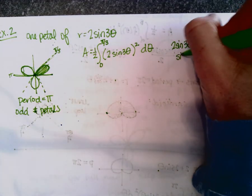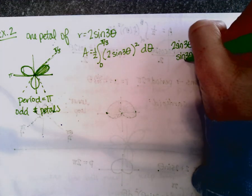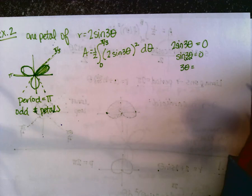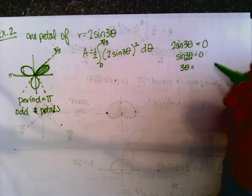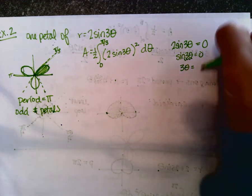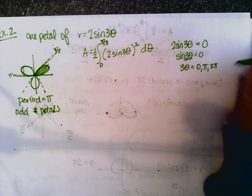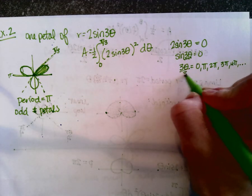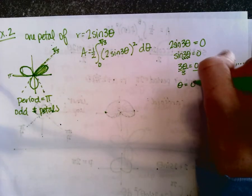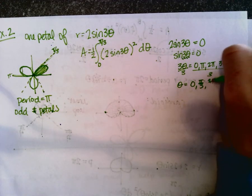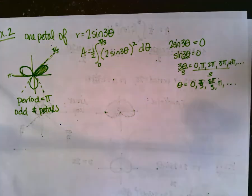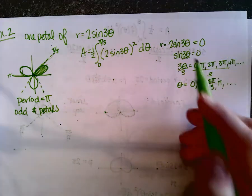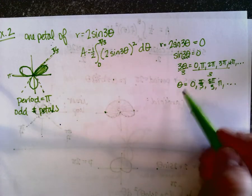Divide by two to get sine three theta equals zero. When you have a three next to theta inside the sine, you cannot divide by three until the very end. Look at the unit circle: sine equals zero at zero, pi, two pi, three pi, four pi, and so on. Dividing all of those by three gives theta equals zero, pi over three, two pi over three, pi, etc. So every pi over three we have a radius that equals zero.